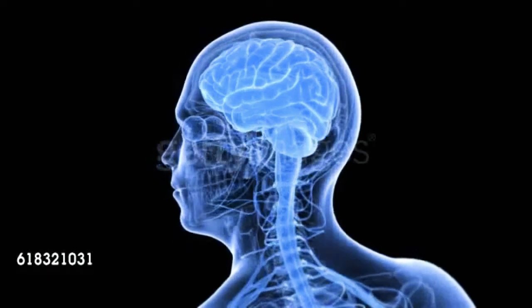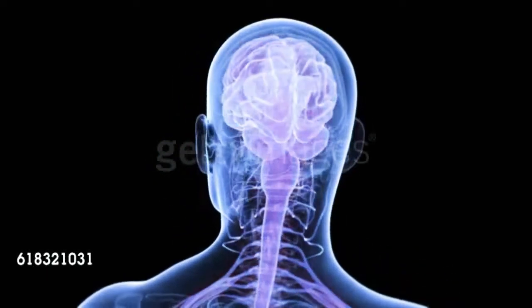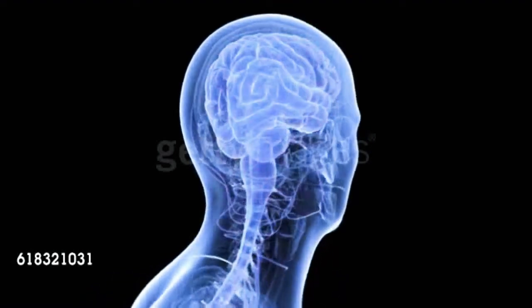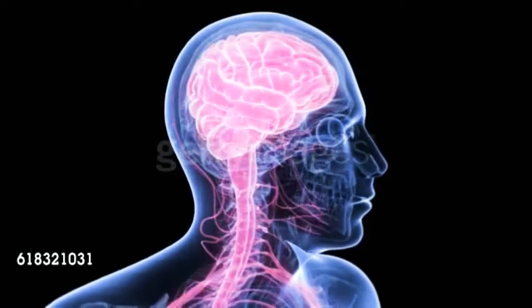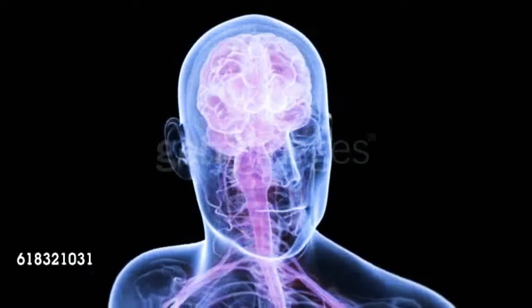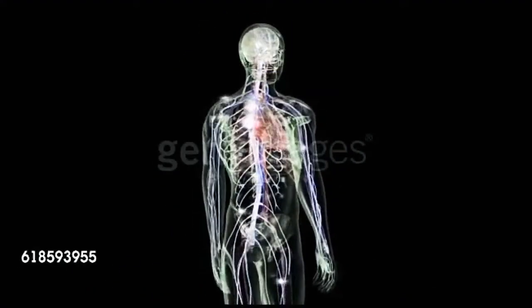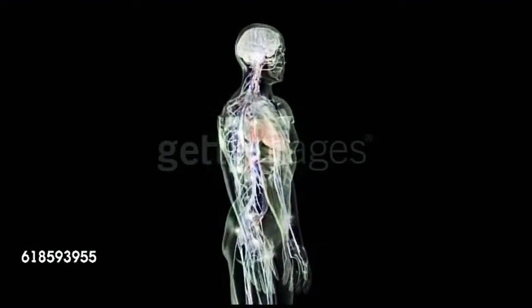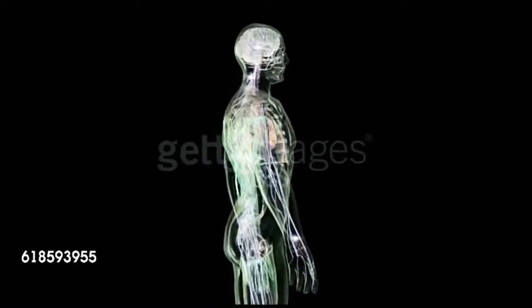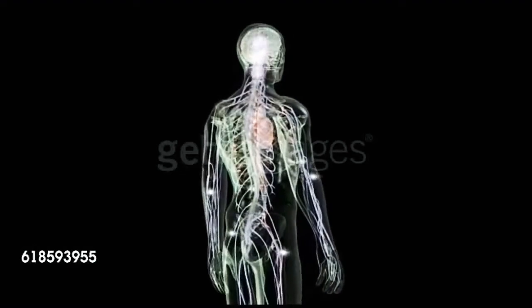The spinal cord is connected to the brain stem and runs down through the spinal canal from the base of the brain. It carries information from various parts of the body to the brain and from the brain to various parts of the body.